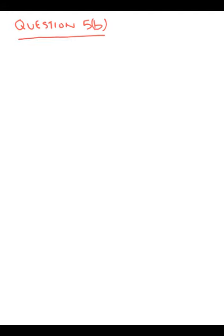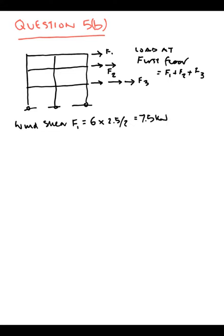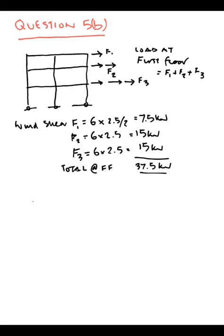Question 5(b): Now we're going to look at the cumulative wind loading which happens at the first floor. F1 + F2 + F3. We calculate the wind shears from the story heights. At the top, it's half the story height, so the total comes up to 37.5 kN/m as a wind shear which acts at first floor.